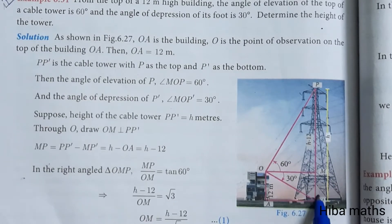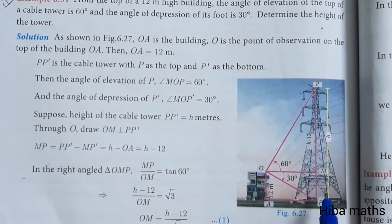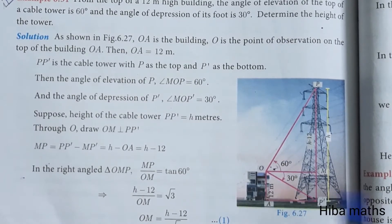The angle of elevation of the top of the tower is 60 degrees and the angle of depression is 30 degrees. I have to find the height of the tower.